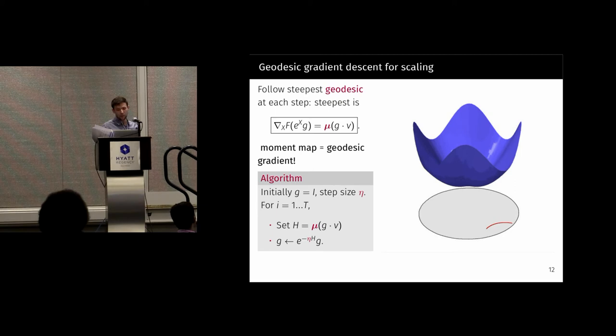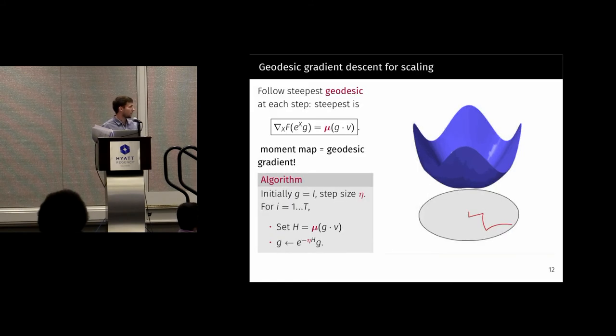In the hyperbolic plane, maybe you started near the boundary, and your geodesic sort of told you to go towards the center. You would go along this half circle for a while, and then you would maybe go along a different half circle, in which the gradient pointed, and so on and so forth.